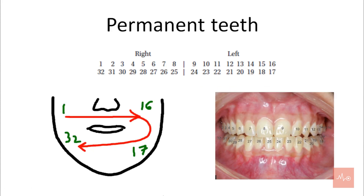Moving on to the permanent teeth in the Universal notation system. Every tooth has a specific number. It starts from 1, that is the upper right third molar, and goes to 16, that is the upper left third molar, goes down to 17 in the lower quadrant, that's the lower left third molar, and then goes to 32, that is the lower right third molar. So this is how it follows the path.